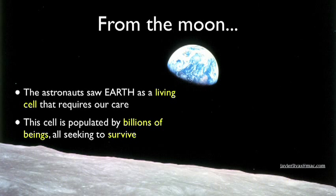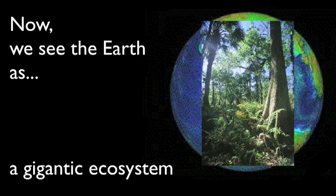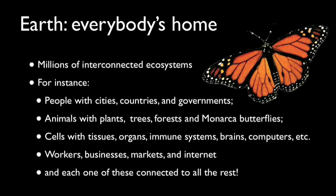From the moon, the astronauts saw Earth as a living cell that requires our care. This cell is populated by billions of beings all seeking to survive. We see the Earth as a gigantic ecosystem — everybody's home. Millions of interconnected ecosystems: people with cities, countries and governments; animals connected with plants, trees, forests, and monarch butterflies; cells with tissues, organs, immune systems, brains, computers; workers with businesses, markets, and the internet — each one of these connected to all the rest.